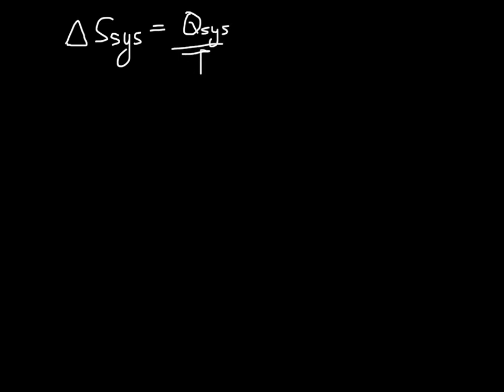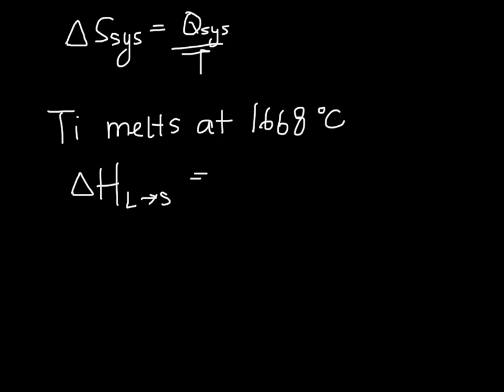So let's consider the melting of titanium. Titanium melts at 1668 degrees C. The enthalpy change for this process, liquid to solid, is 18.7 kilojoules per mole.